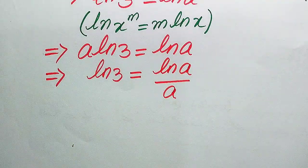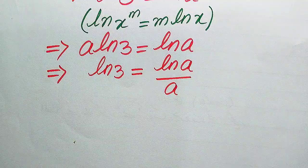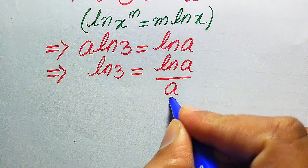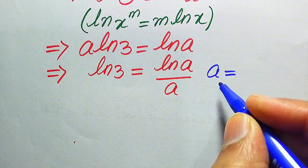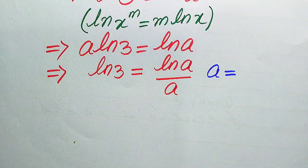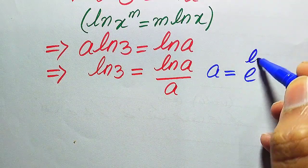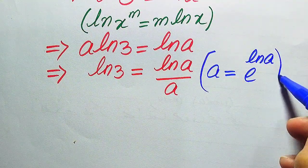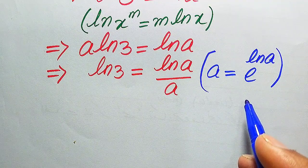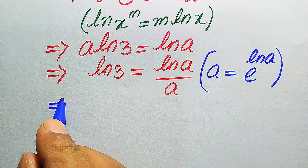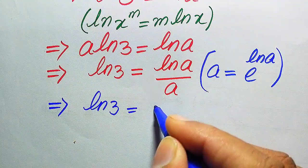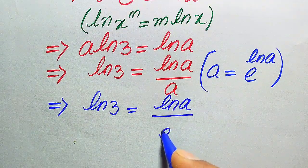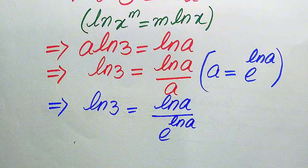Here we use the exponential property: if we have a number a and we apply log and anti-log at the same time, it is written as e to the power of log a, because the log and e cancel each other out, and we get a. So according to this property, we rewrite this a as e to the power of log a, giving us: log 3 equals log a divided by e to the power of log a.